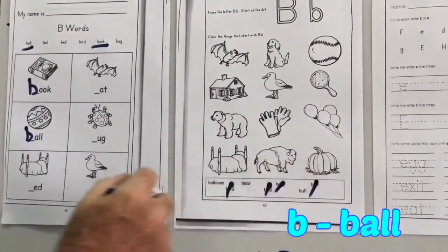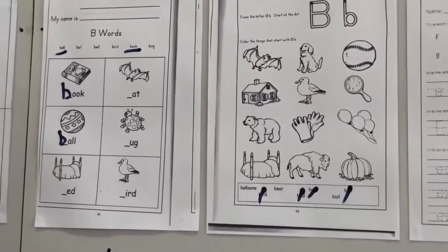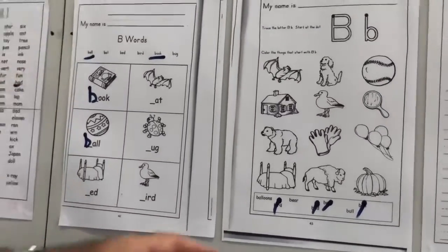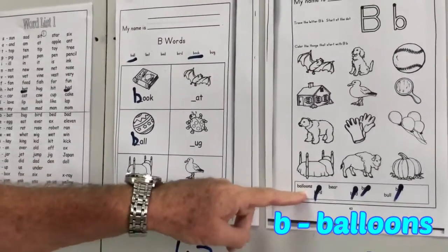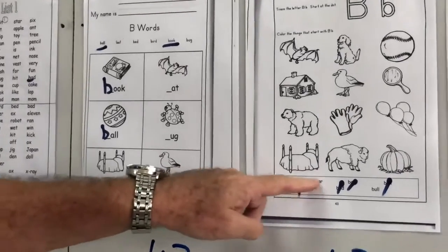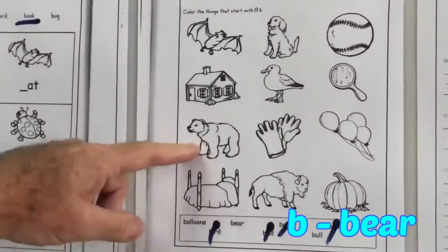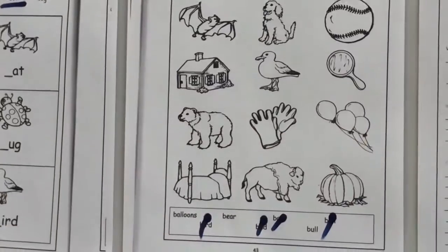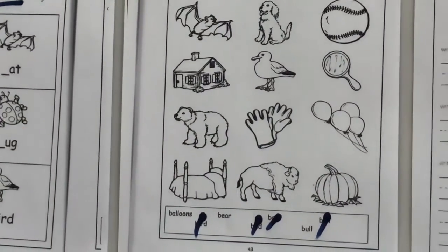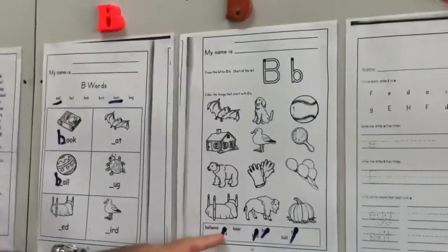And but ball is also on 42, so what have we got left? Balloons and bear. OK, I think you know bear, I think you know balloons, so color the words beginning with B.